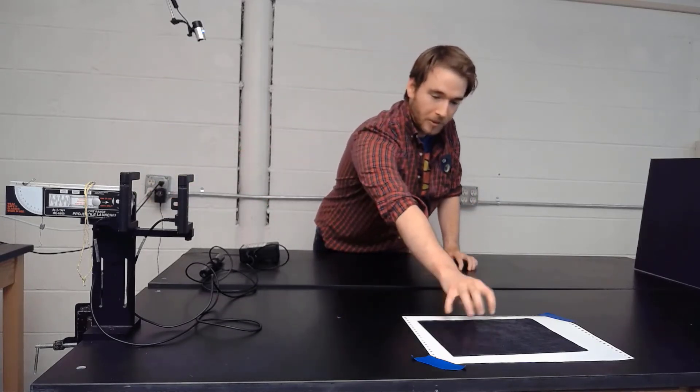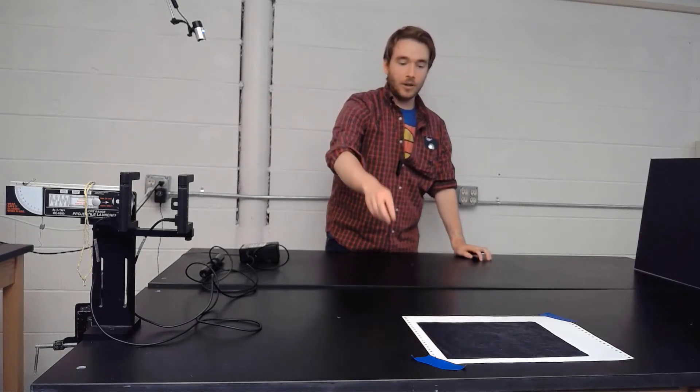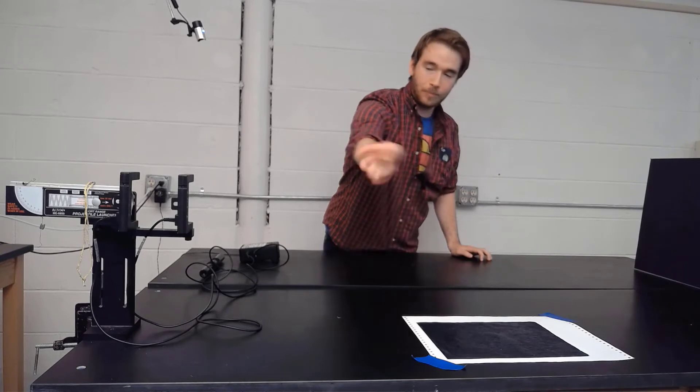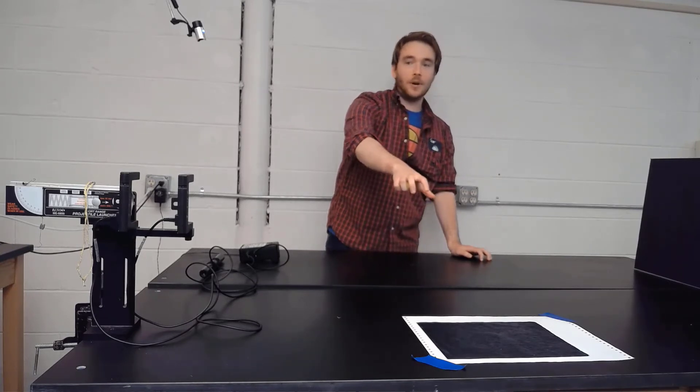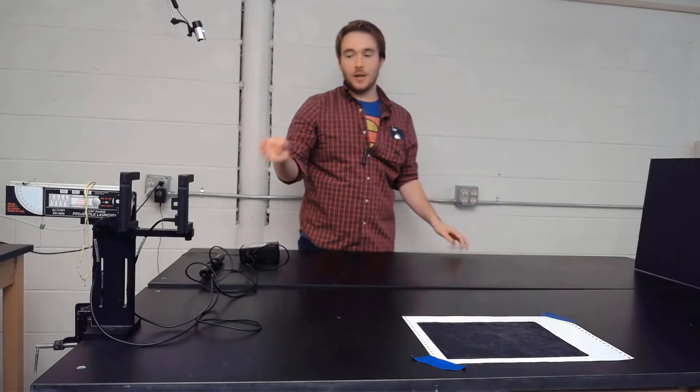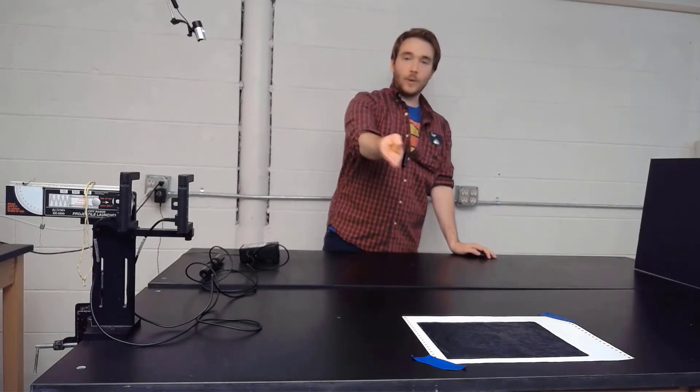And so what this carbon paper is going to do is we're going to launch the projectile three different times, and we're going to mark where it lands. So when the projectile lands on the carbon paper, it's going to leave a mark on the white paper. And then we can use a meter stick to measure how far from the base we get to wherever we end up.